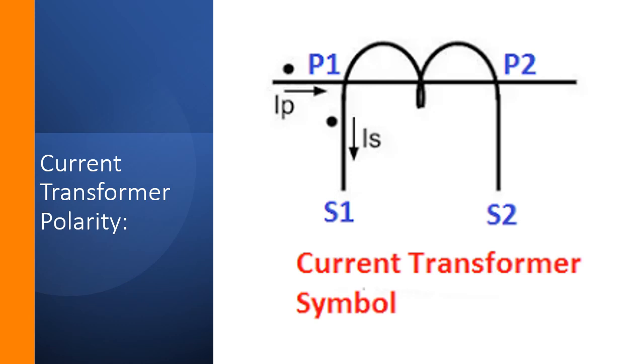You can see that it is a symbol of current transformer. P1 and P2 is shown on primary side, basically indicating polarity. On the secondary side, you can see that S1 and S2 is shown. So polarity on primary side is P1 and P2, and secondary side S1 and S2 is shown in CTs.